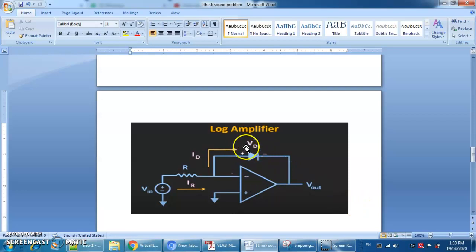In the feedback path this is the diode and in the input path it is the resistor. So this is in the log amplifier.